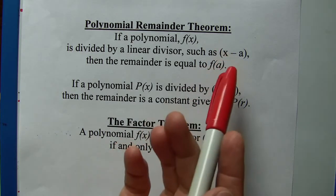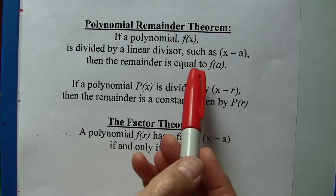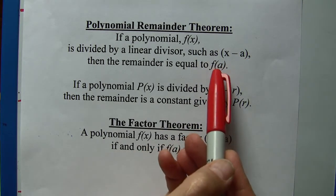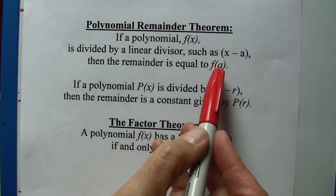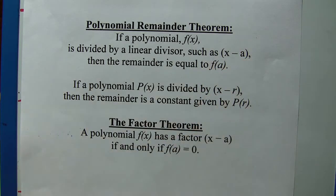When you do that using synthetic division, if you had plugged in the opposite of a here, the positive a, you would have gotten the same answer for f(a) as you would in the remainder for the synthetic division.